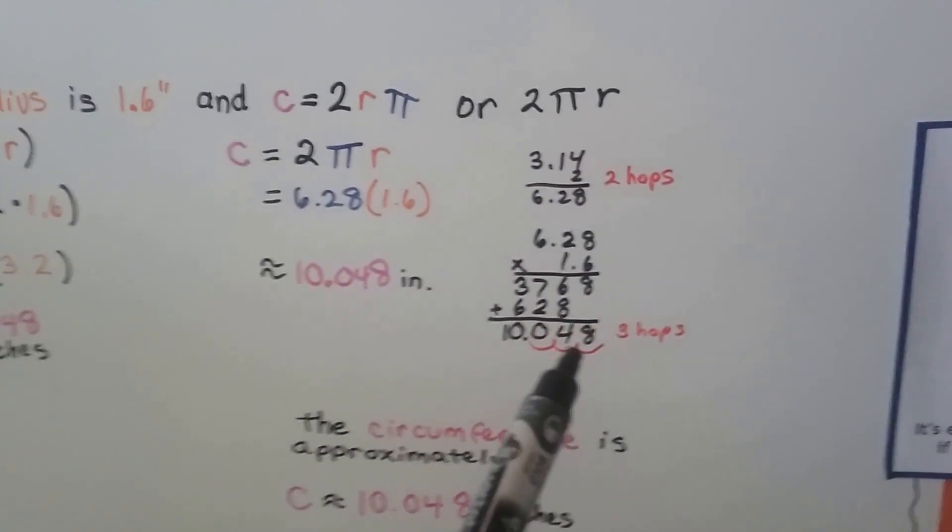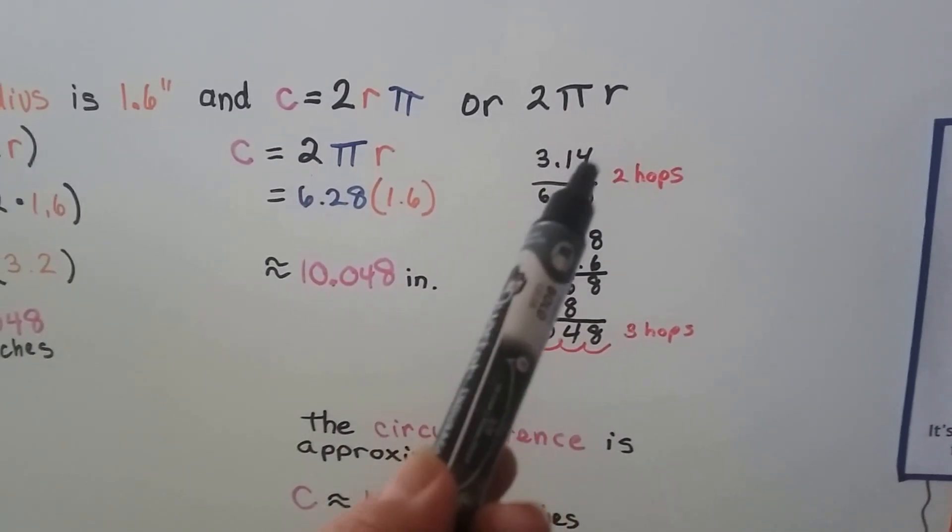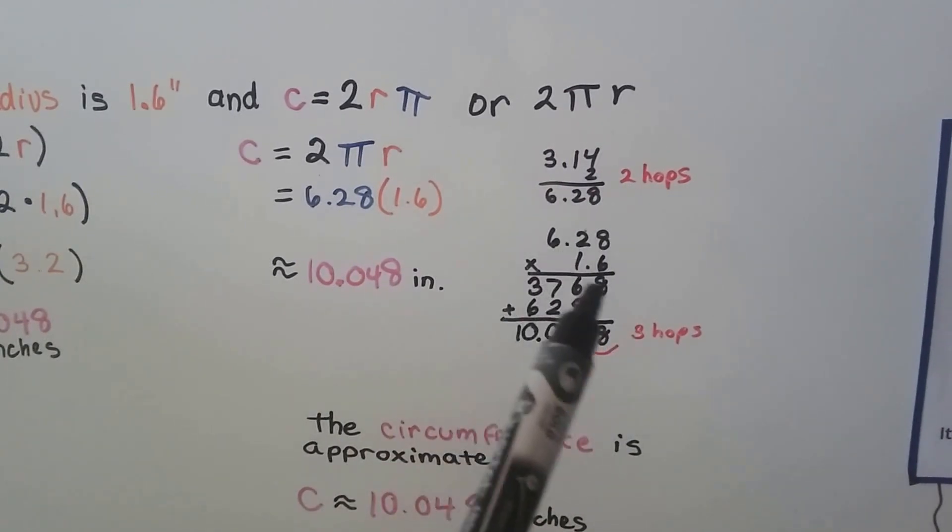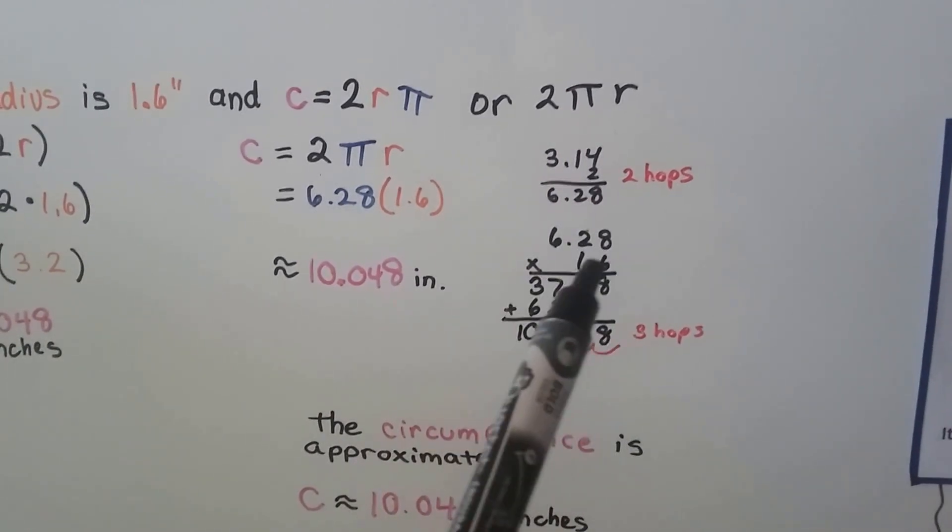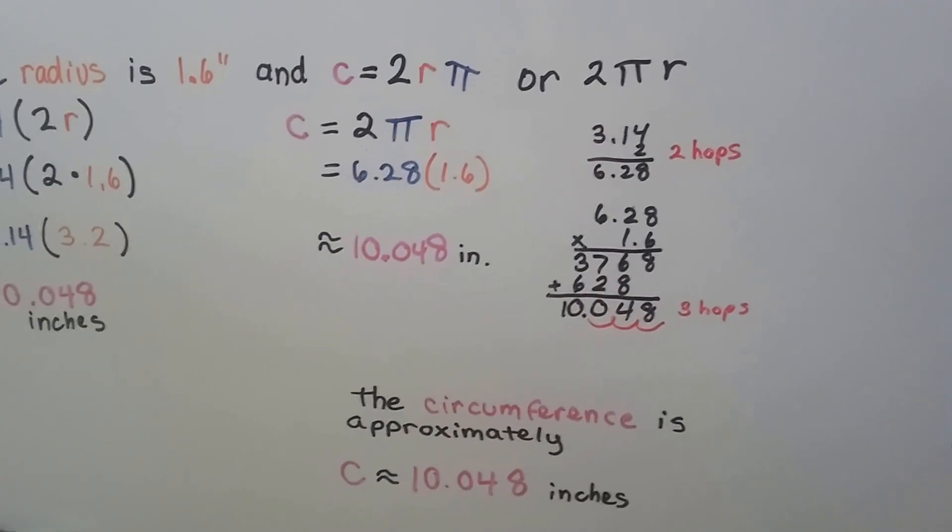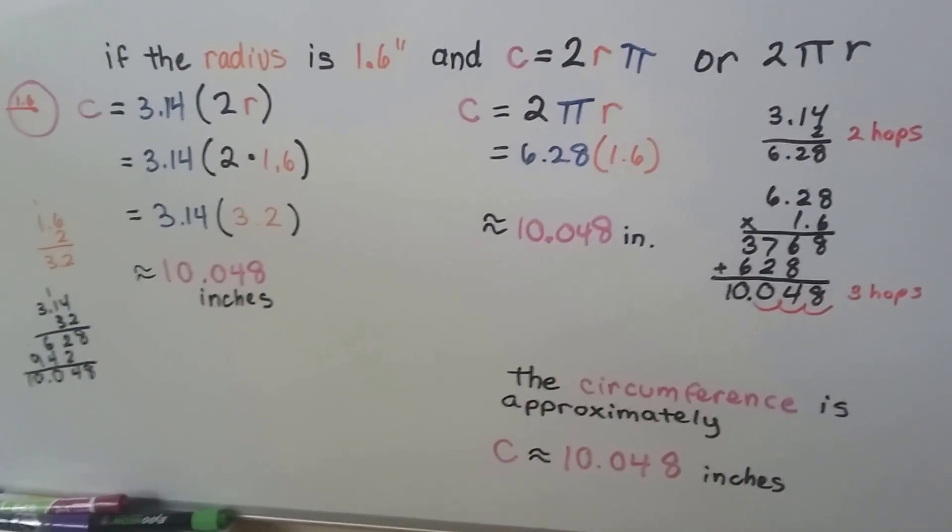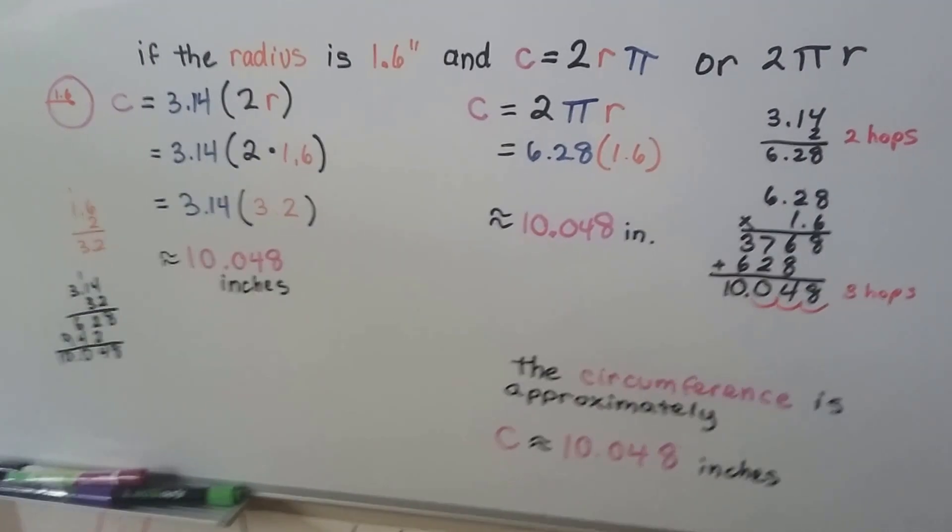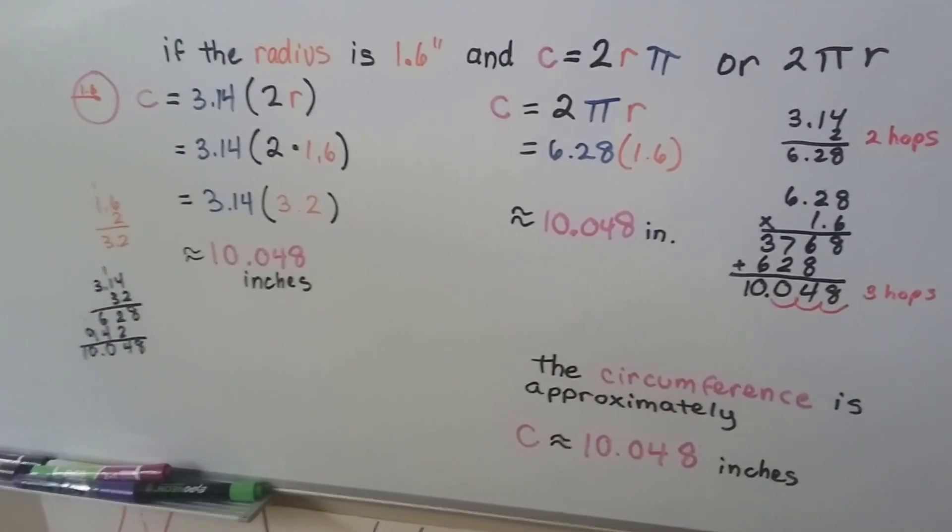Just remember, if you're doing this on scratch paper by hand, if there's 2 hops in the equation, there's going to be 2 hops in the product. If there's 3 hops in the equation, 1, 2, 3, there's going to be 3 hops in the product. So our circumference is approximately 10.048 inches, or 10 and 48 thousandths of an inch.